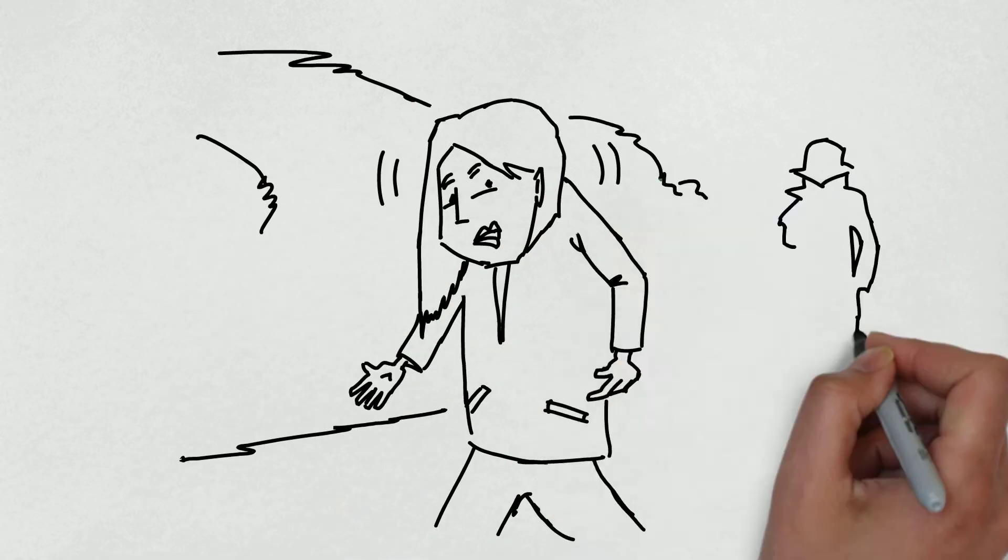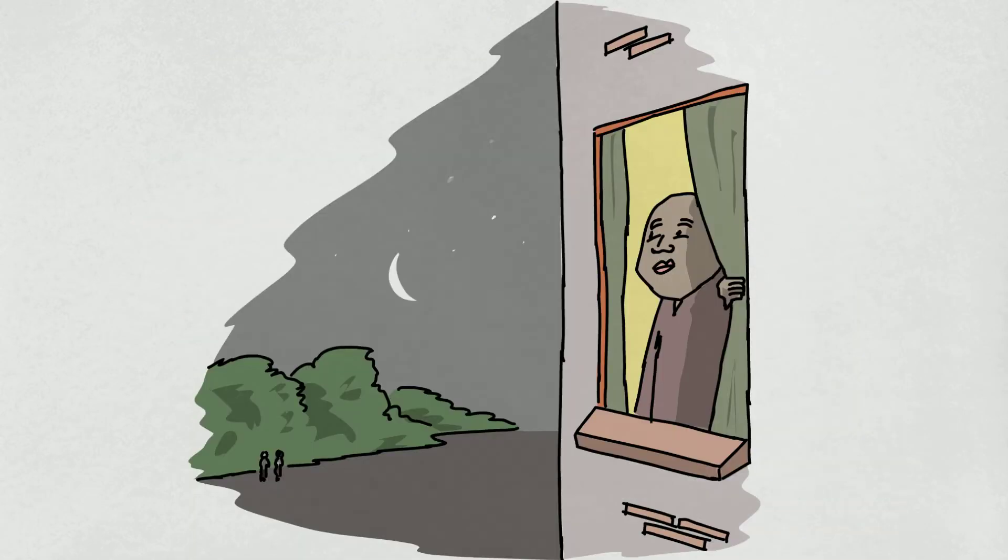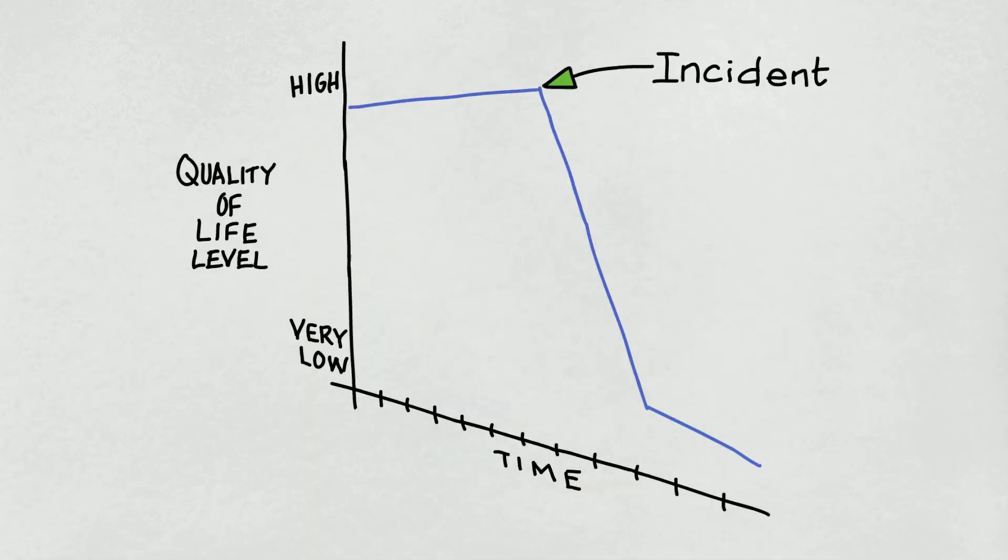Where the victim now feels vulnerable or intimidated. Perhaps they no longer feel safe. Any impact there has been on their family. How their quality of life has changed on a day-to-day basis.